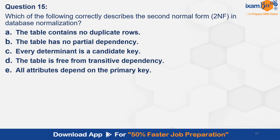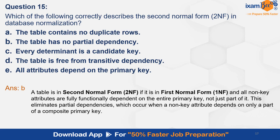Question 15. Which of the following correctly describes the second normal form in database normalization? Option A. The table contains no duplicate rows. B. The table has no partial dependency. C. Every determinant is a candidate key. D. The table is free from transitive dependency. E. All attributes depend on the primary key. And the correct answer is B — the table has no partial dependency. A table is in second normal form if it is in first normal form and non-key attributes are fully functionally dependent on the entire primary key, not just a part of it. This eliminates partial dependencies, which occur when a non-key attribute depends on only a part of a composite primary key.